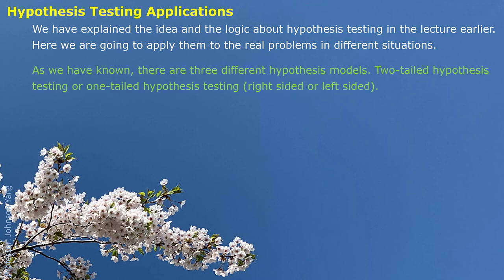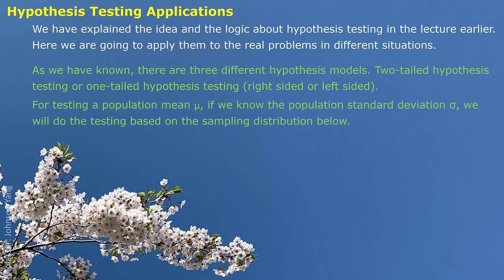As we have known, there are three different hypothesis models: two-tailed hypothesis testing or one-tailed hypothesis testing, right-sided or left-sided. For testing a population mean, if we know the population standard deviation sigma, we will do the testing based on the sampling distribution.